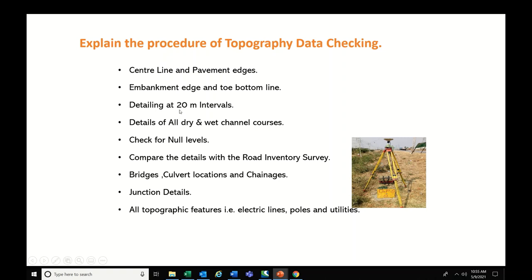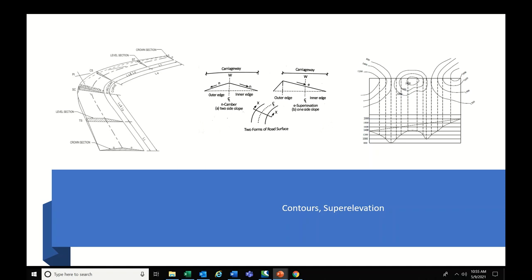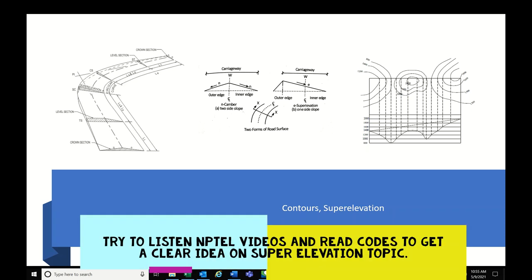For contours and super elevation, global companies mainly focus on the super elevation diagram. Be clear about the super elevation diagram and its representation in the long section, and how rotation is shown. They may ask you to draw this. Contours should be smoother after design — these are common topics in global company interviews.